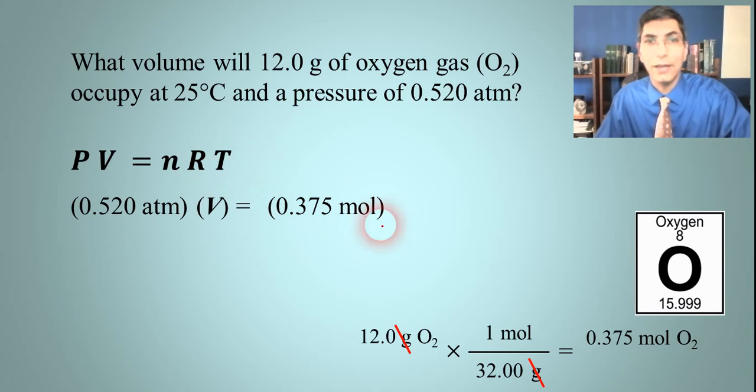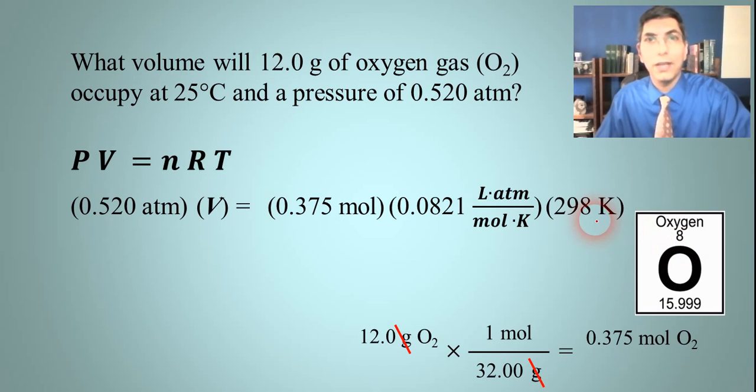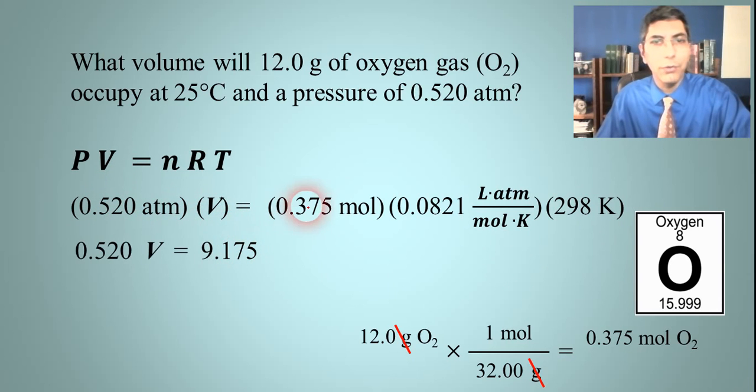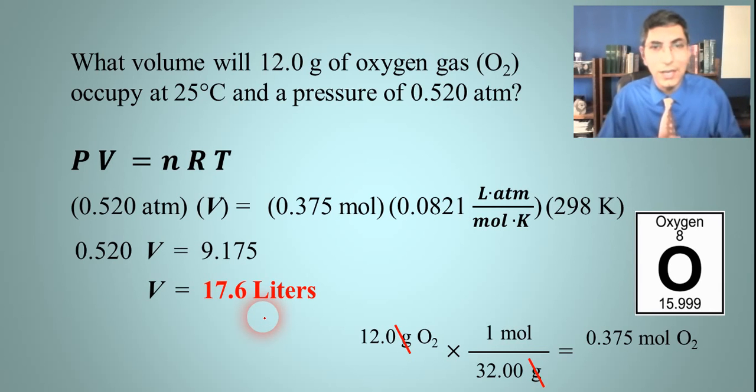That number is going to be plugged in for n. R is my ideal gas constant, 0.0821, and temperature is 25 degrees Celsius, which is 298 kelvins. Now I can do some algebra. We have 0.520 times V equals the product of all these three numbers, which is 9.175. When I divide both sides by 0.520, I get that my volume is 17.6 liters.